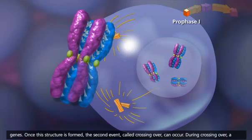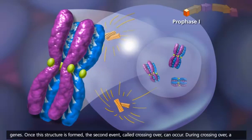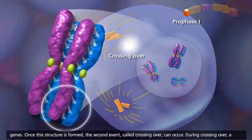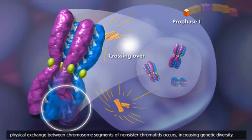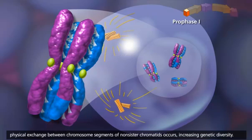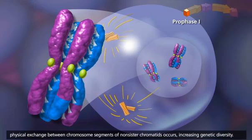Once this structure is formed, the second event, called crossing over, can occur. During crossing over, a physical exchange between chromosome segments of non-sister chromatids occurs, increasing genetic diversity.